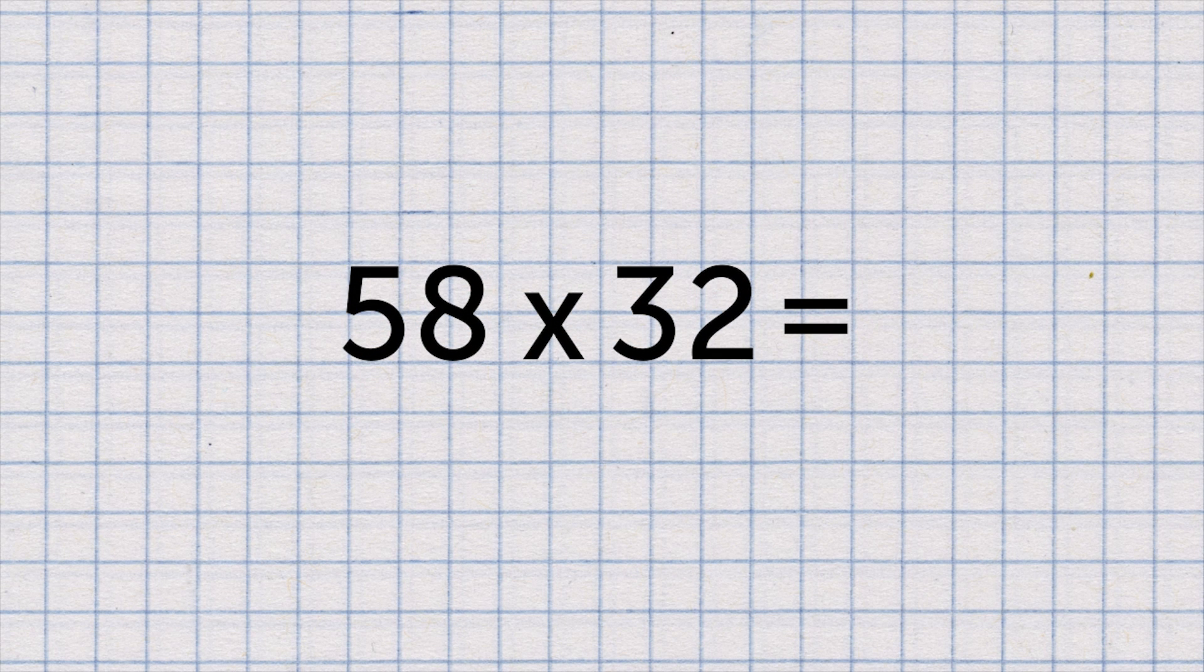How would you tackle this calculation? We want to find out what 32 lots of 58 are. You don't need to know your 32 times table to be able to work this out. Instead, let's use the expanded method to find the answer.